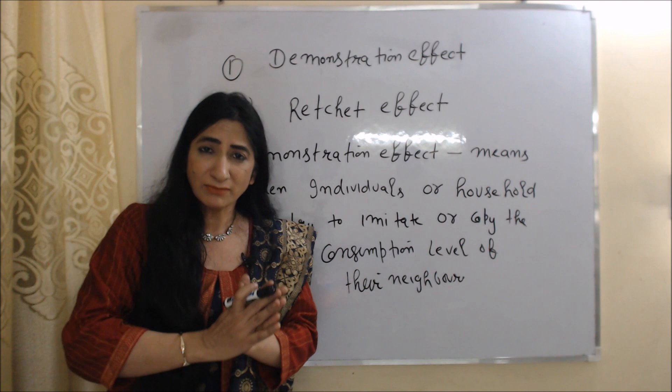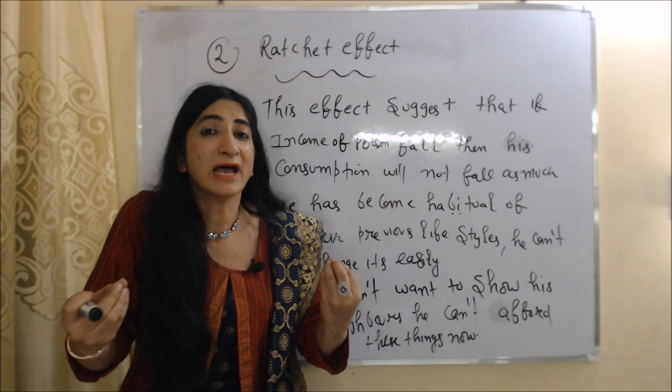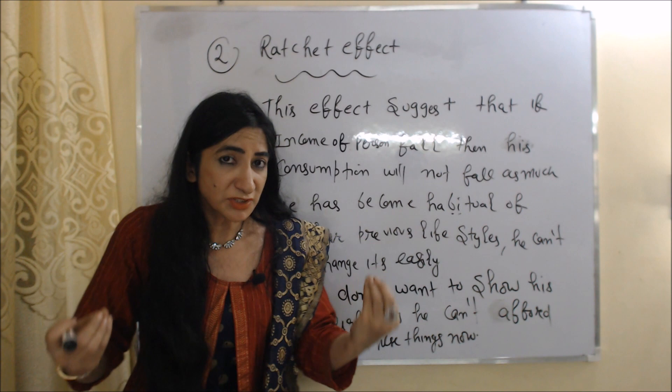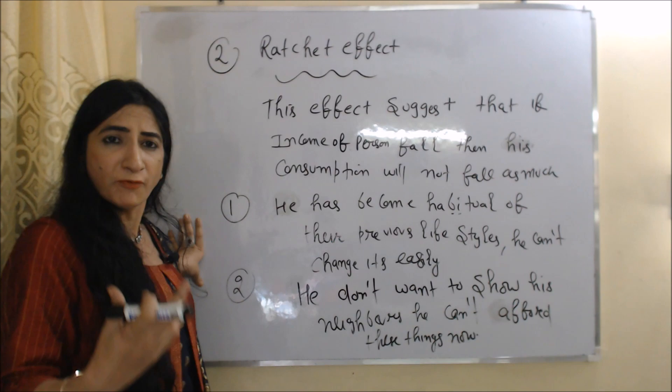Now we talk about ratchet effect. According to this effect, if the income of a person falls, then his consumption will not fall as much. Because he has become habitual of his previous lifestyle and cannot change it easily. Also, he doesn't want to show his neighbors that he cannot afford these things now.